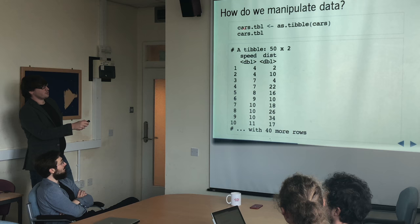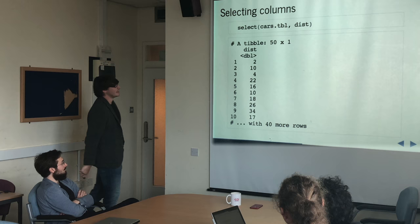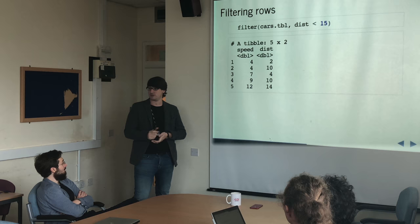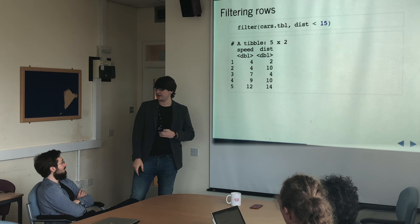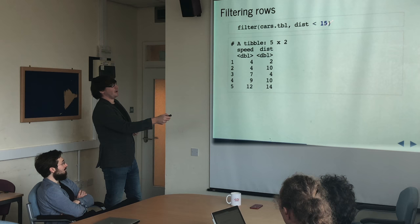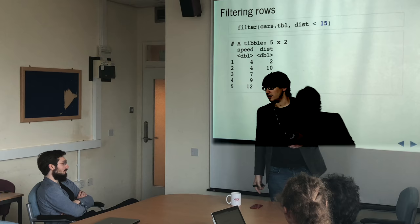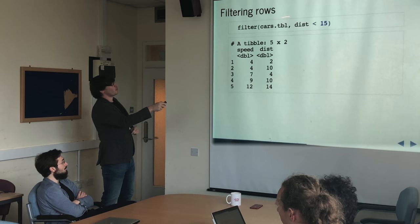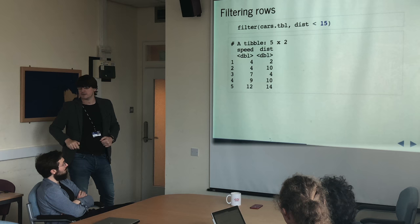So if we convert cars to a tibble, we can start playing around with it with a bit more fun. We can do select — it works exactly the same as with the data frame. We can also do things like filtering. This is where not having to put quotes around things comes in really handy, because most compilers would go: why are you comparing an integer to a string? Whereas this knows it's looking for the variable dist and will compare the entire vector.